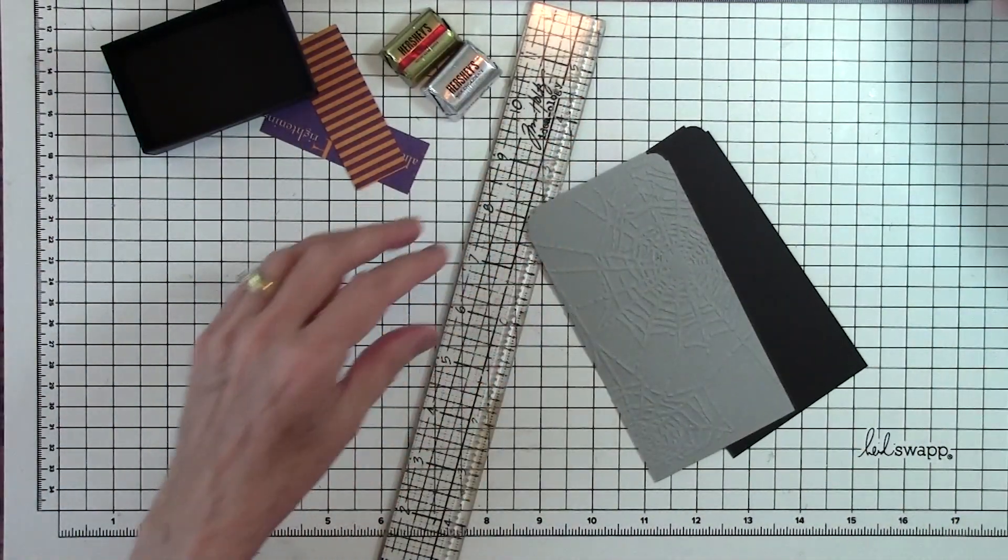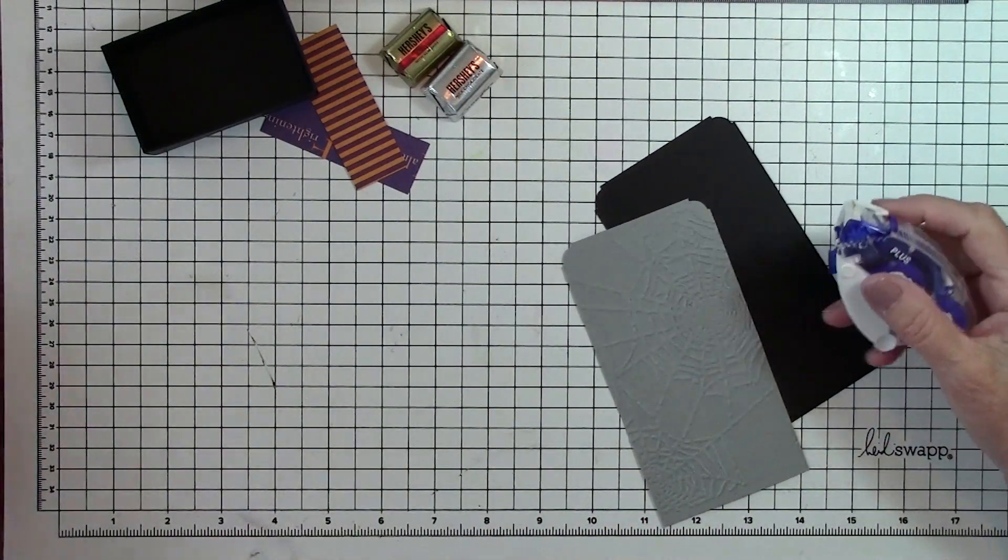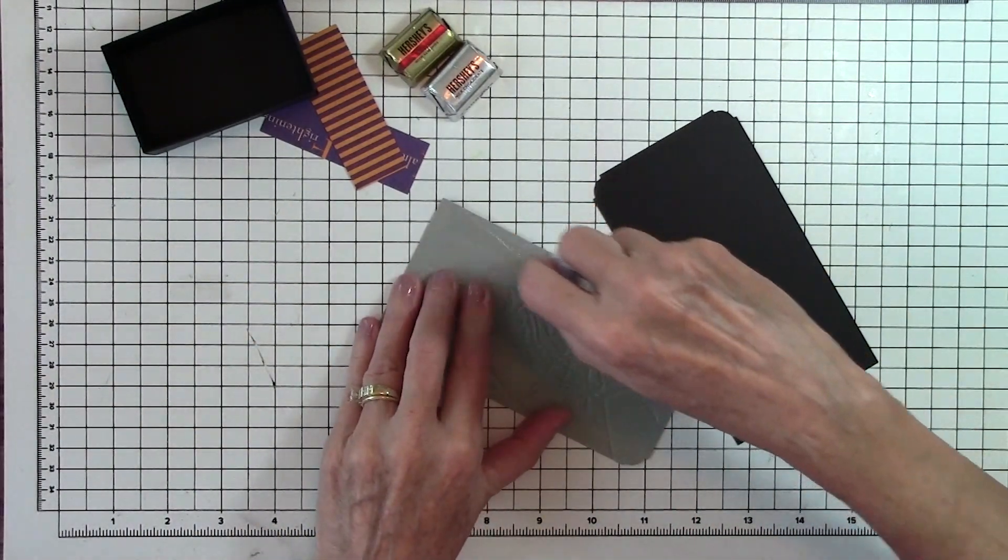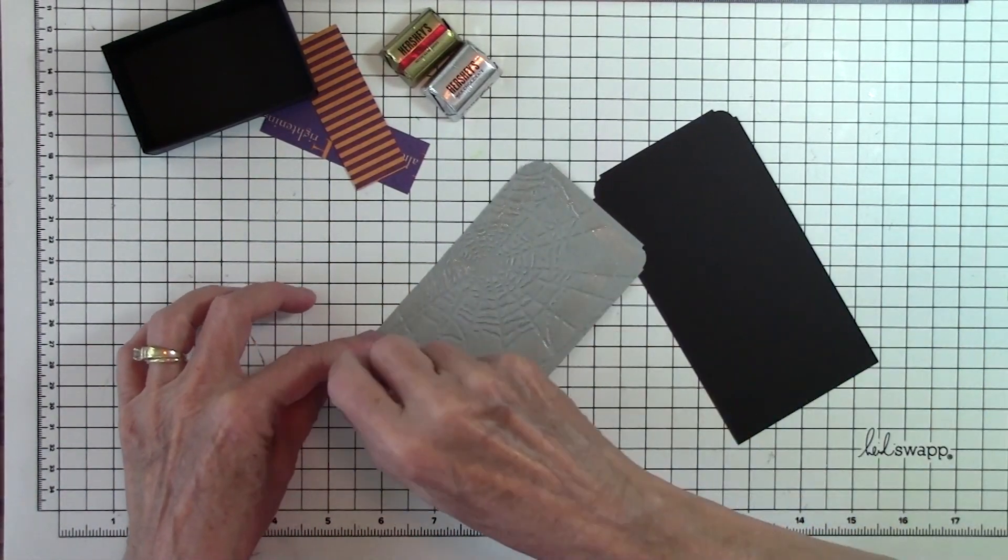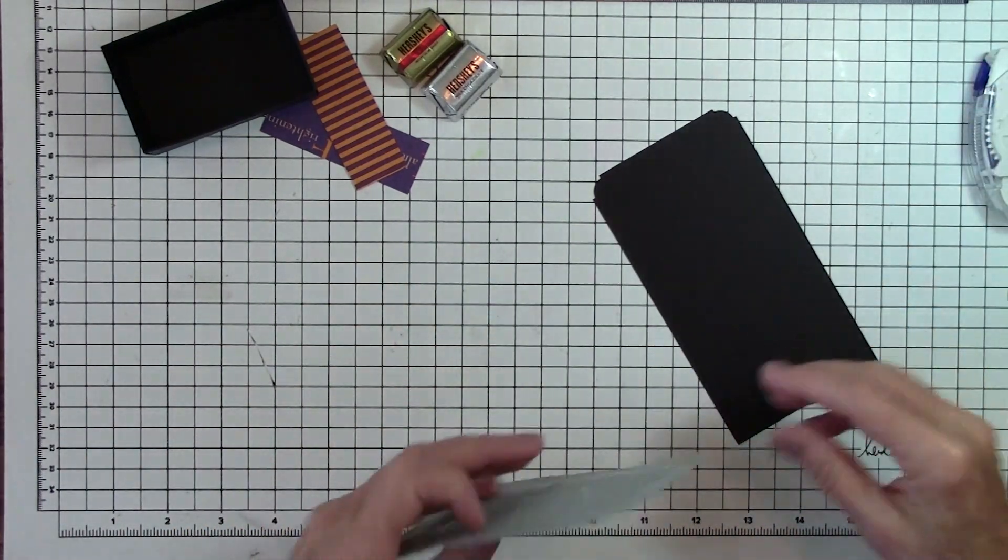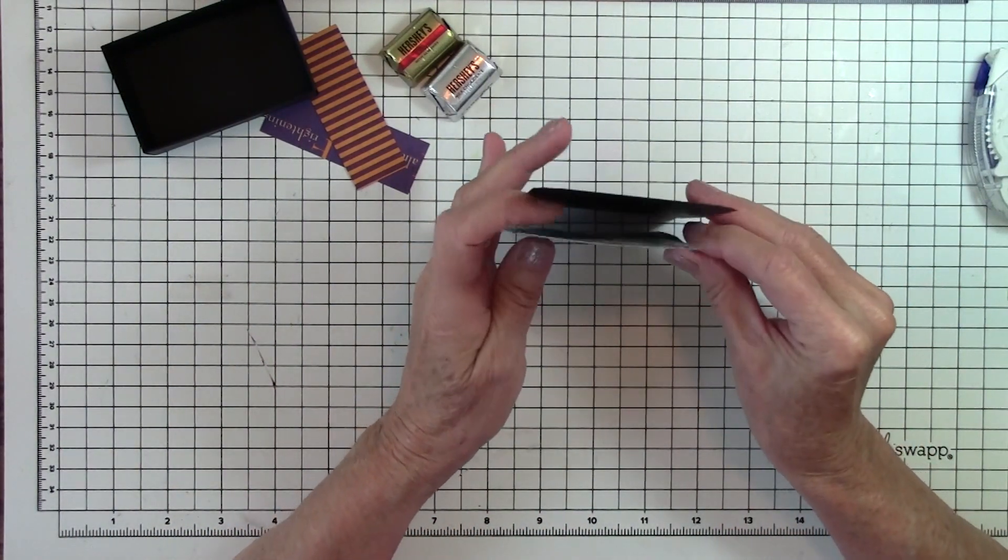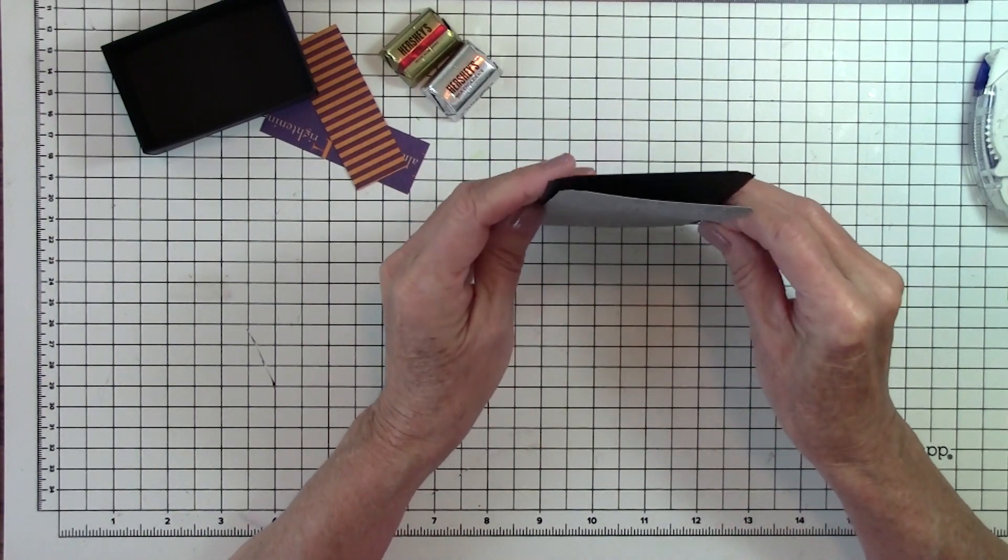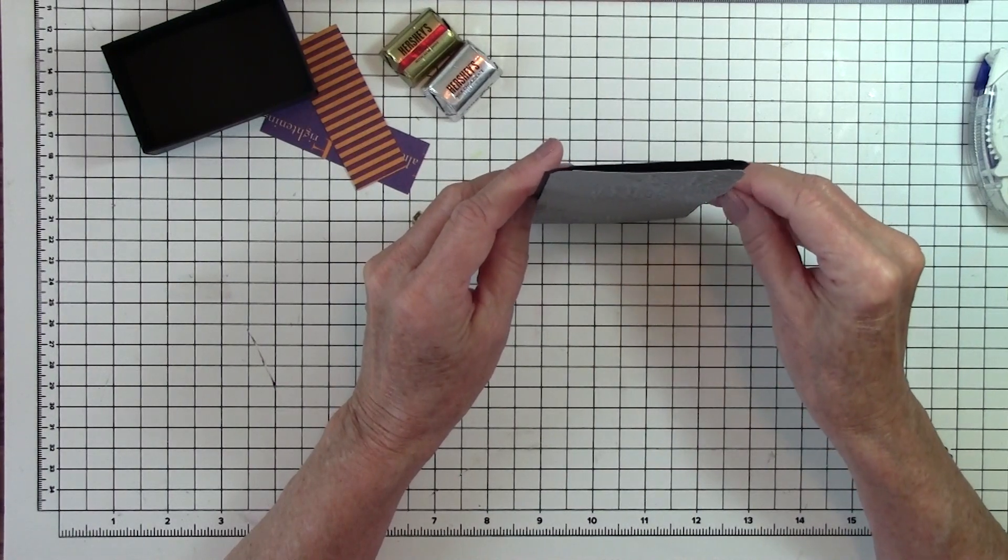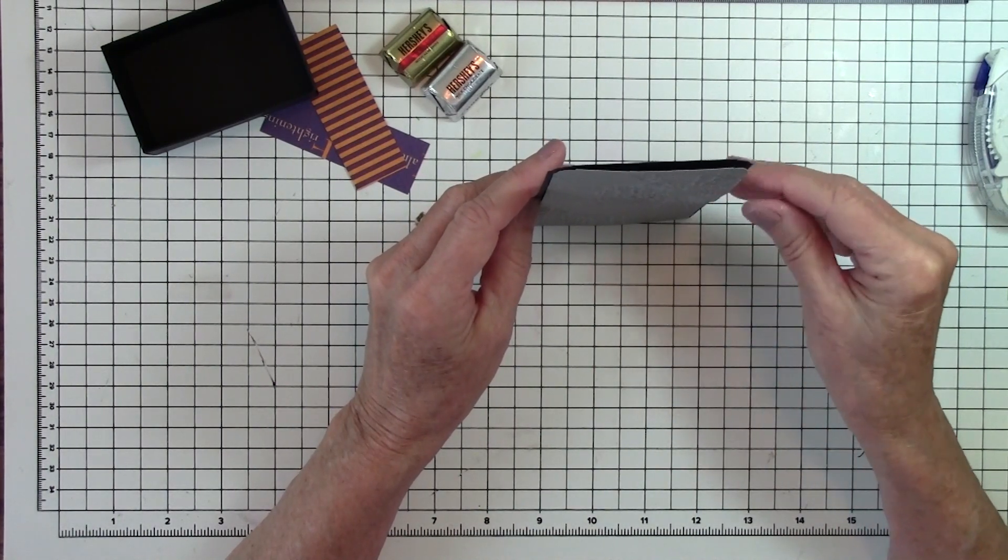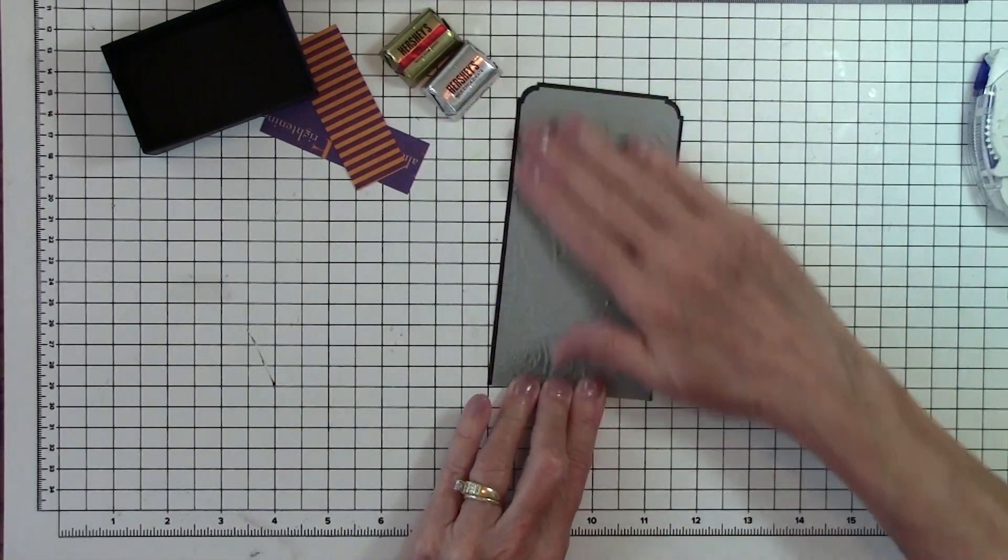Now we're going to take our adhesive and run that on the gray piece of paper. If you line up the bottom edges of this paper, and then center it on your black piece of paper.